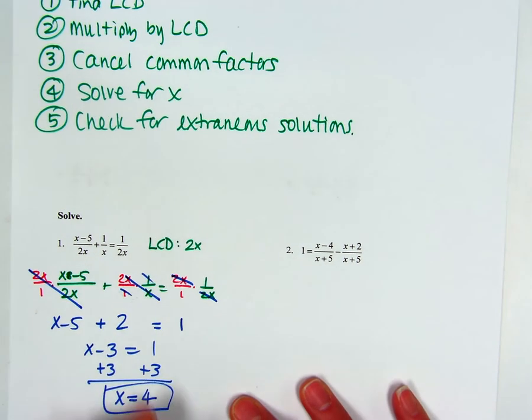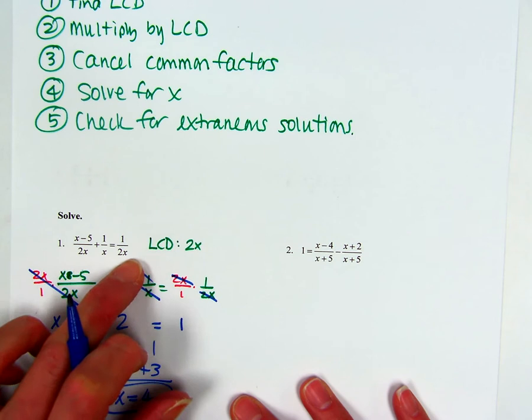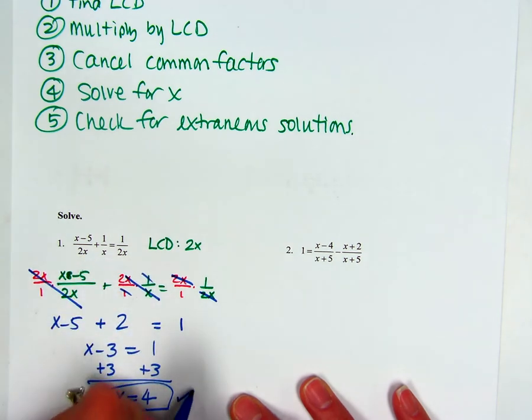All right, and then just double check. Does 4 make my denominator 0? That makes it 8, 4, 8, so I'm good.